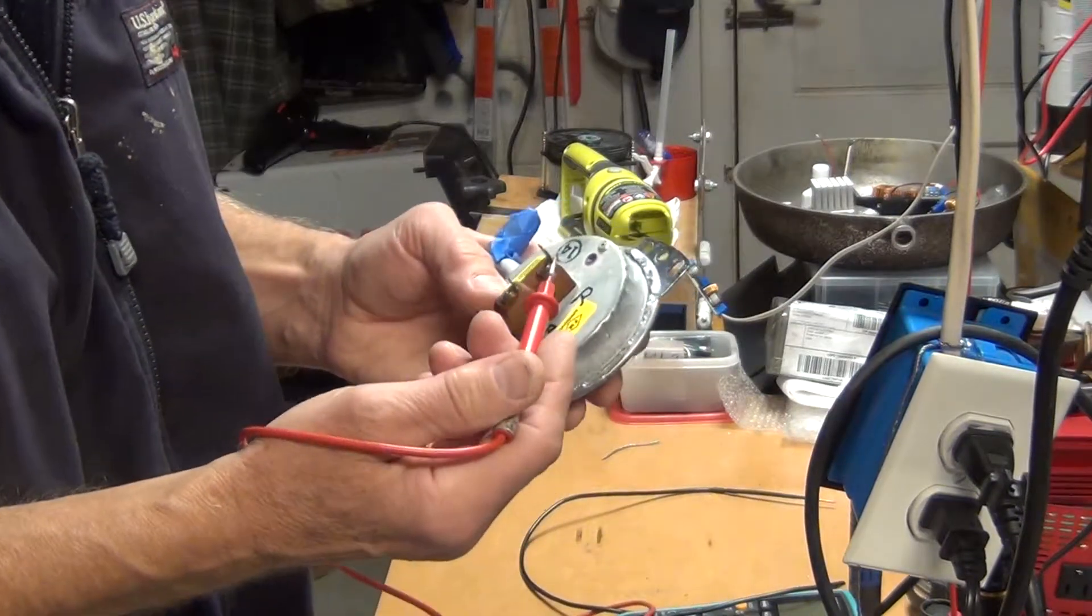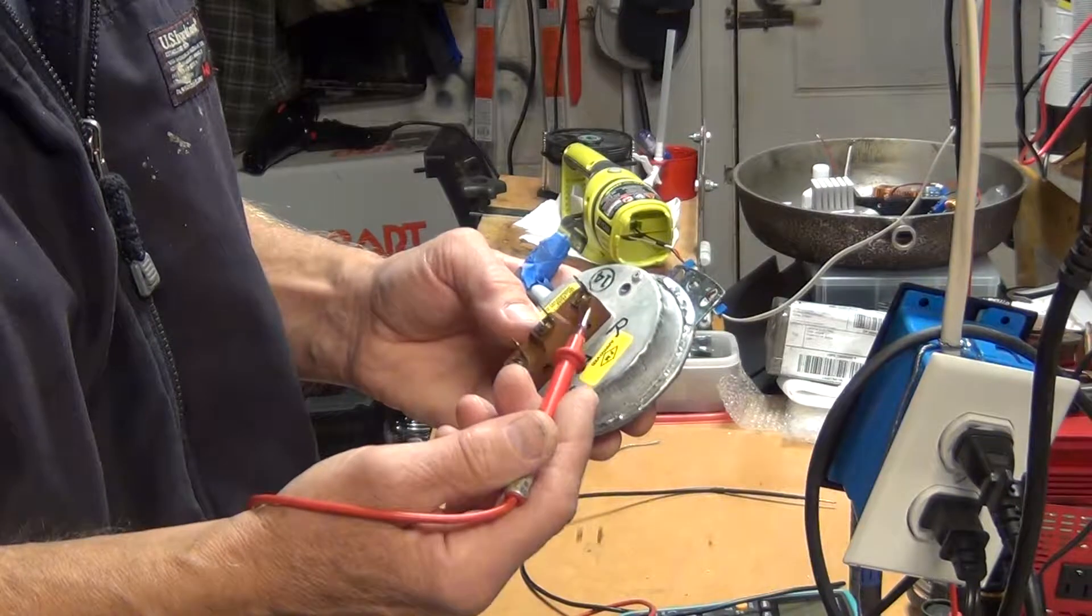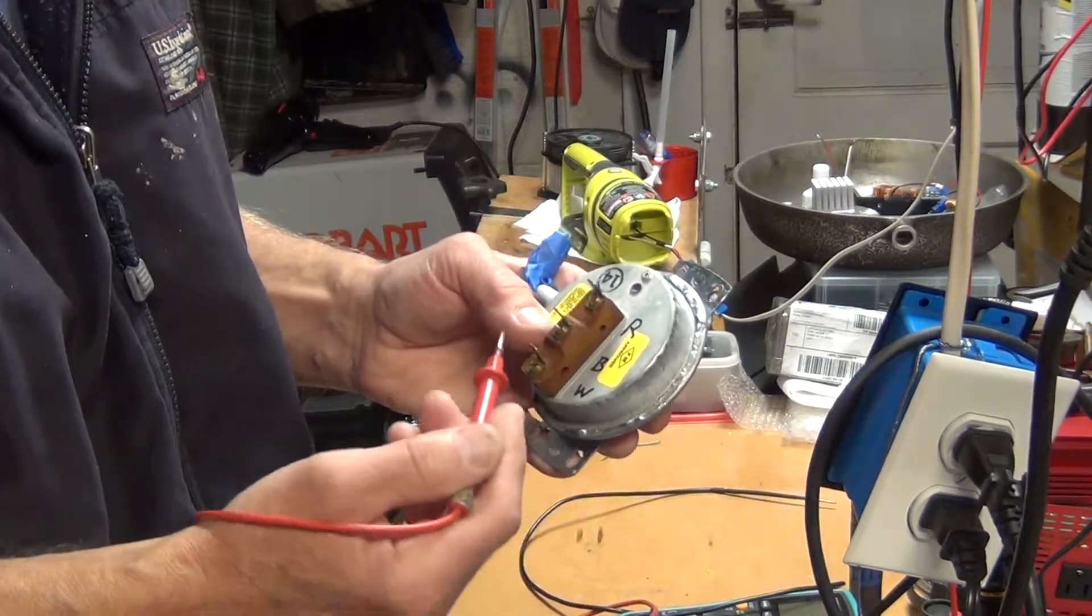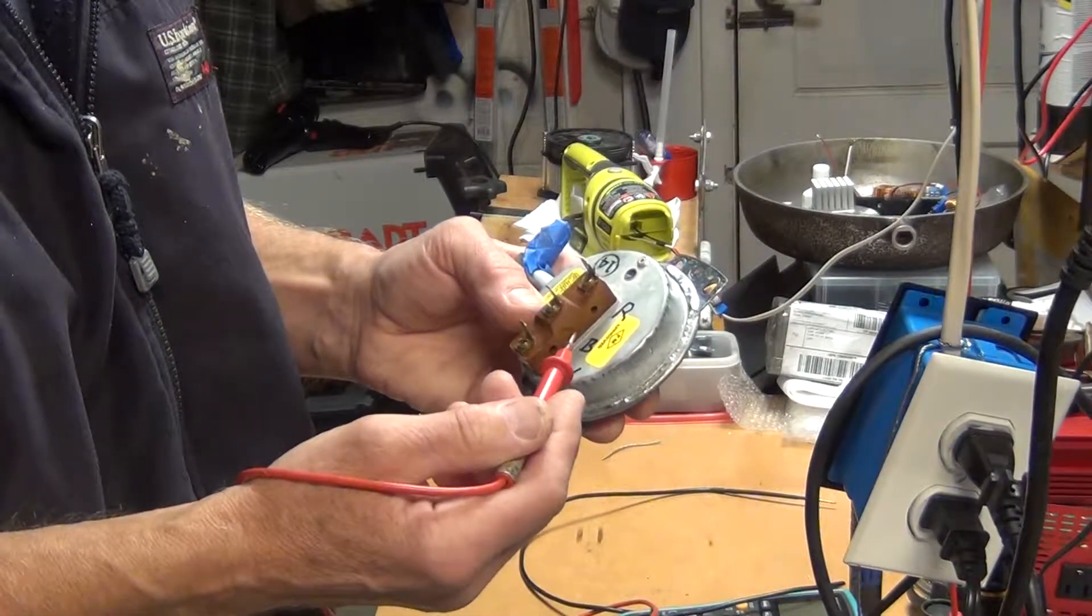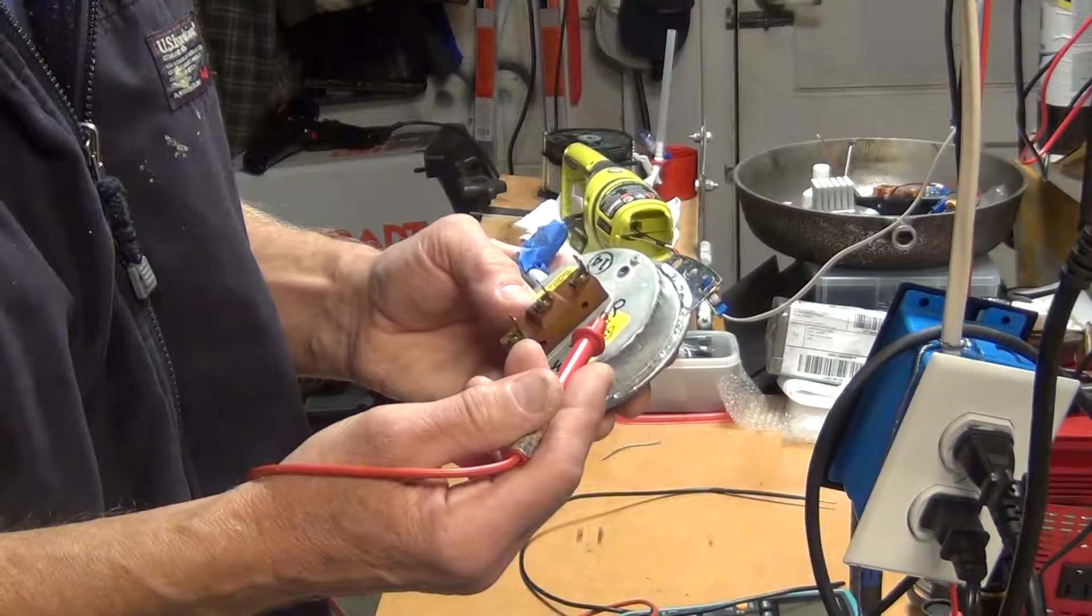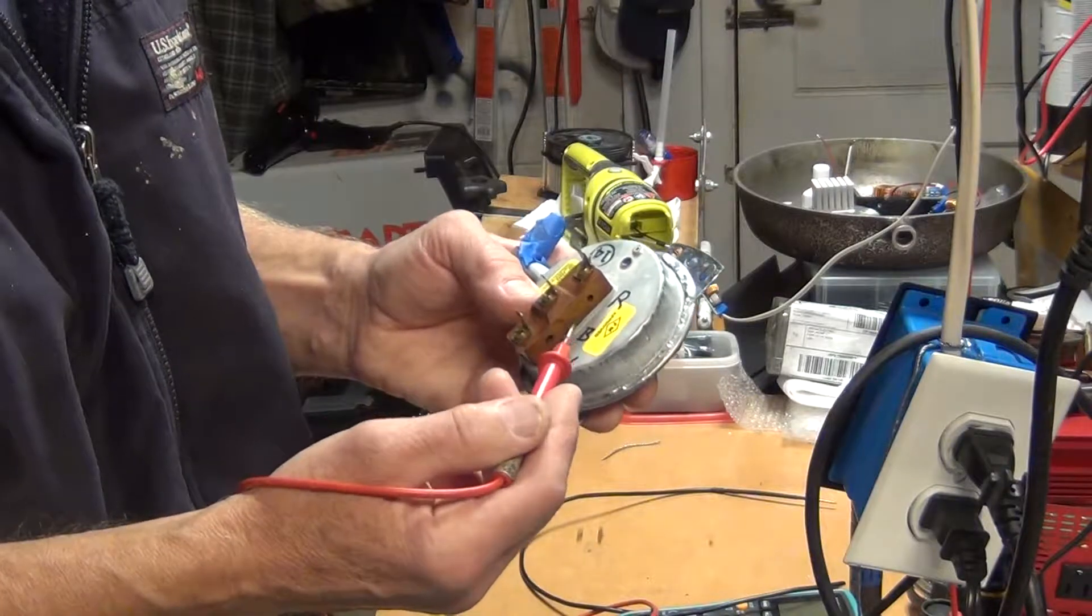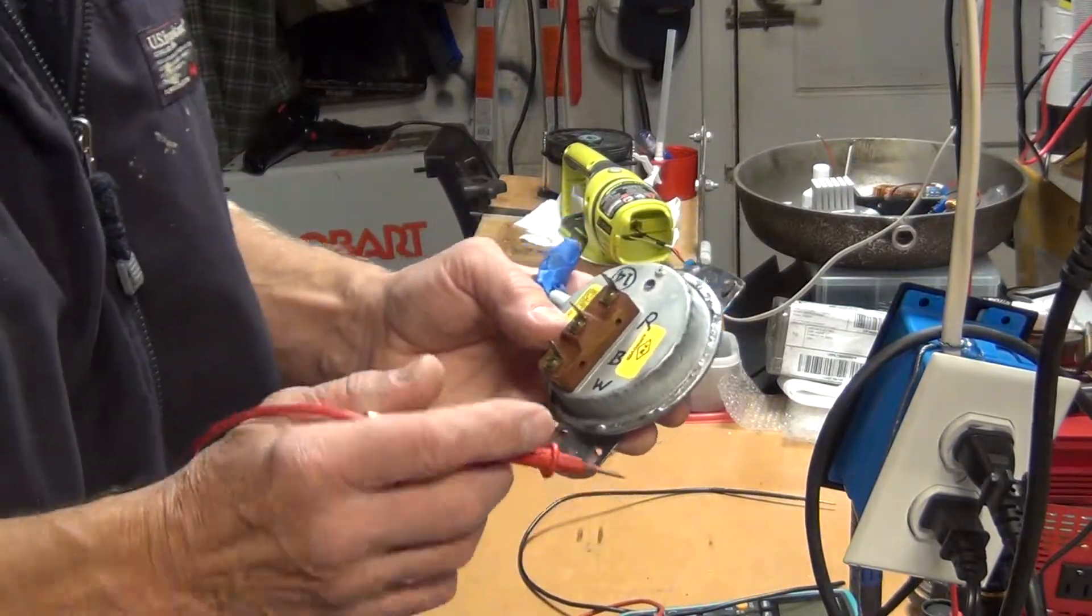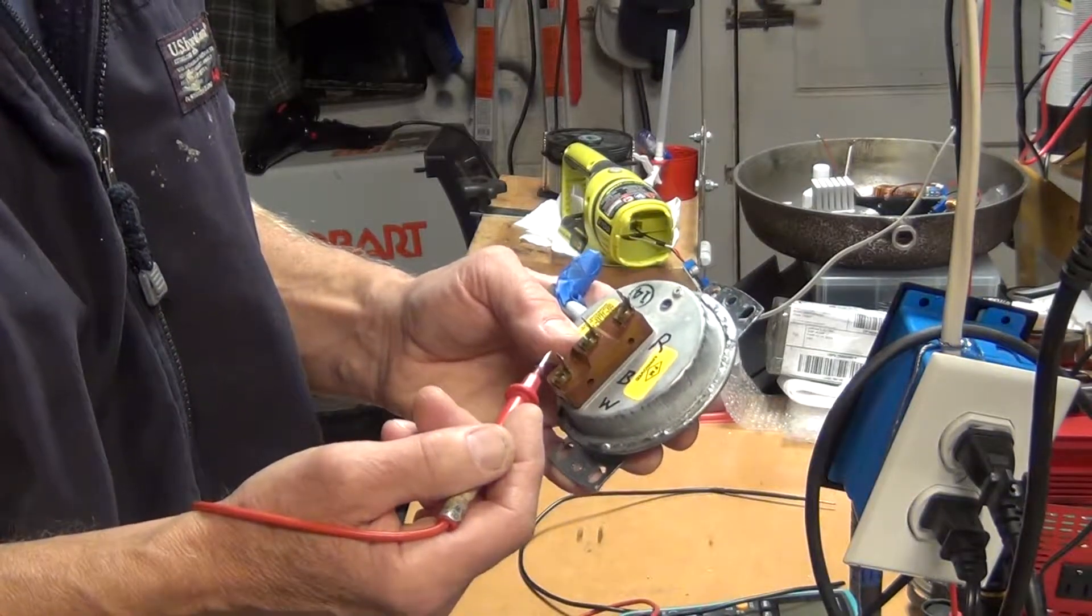So when the furnace is not running, the circuit is closed from red to white. The black-to-white is open—there's never going to be a connection there. And there'll never be a connection on red and black. But I'll get to that later. So this is a normally closed circuit when the furnace starts running.